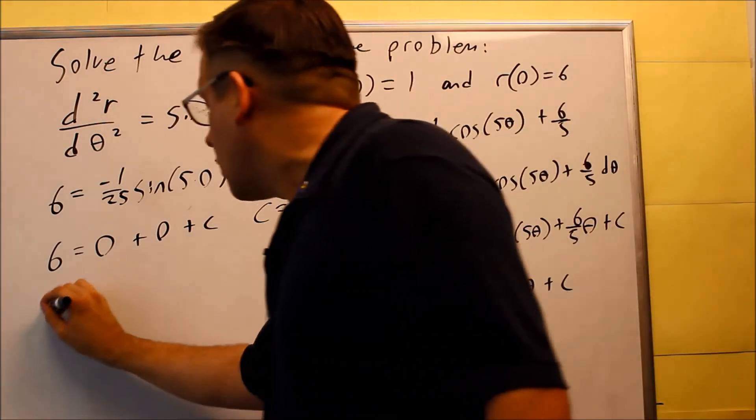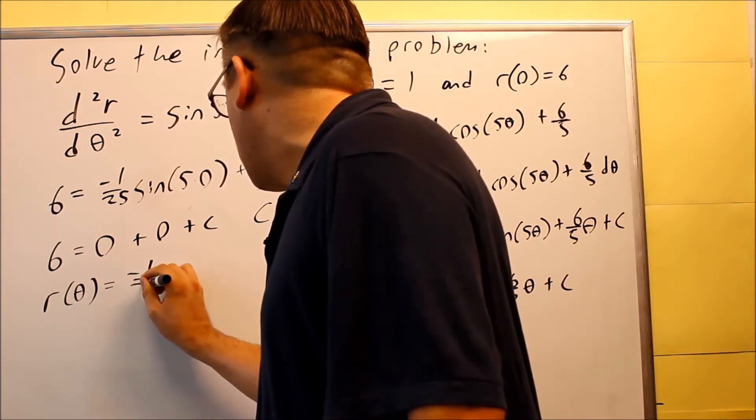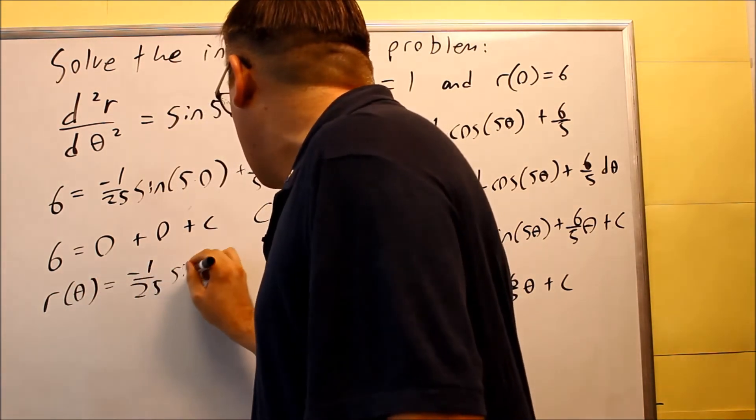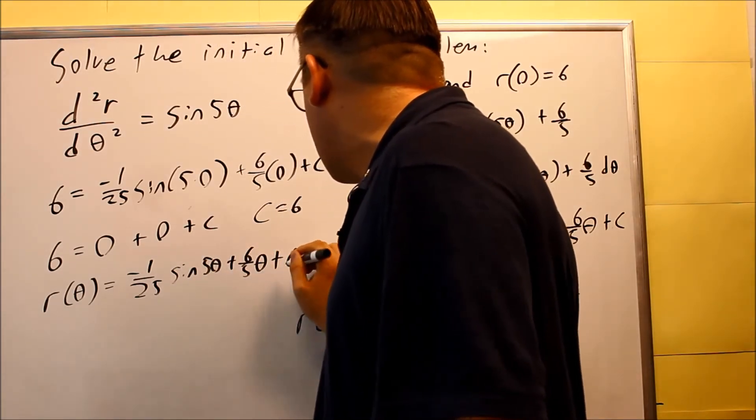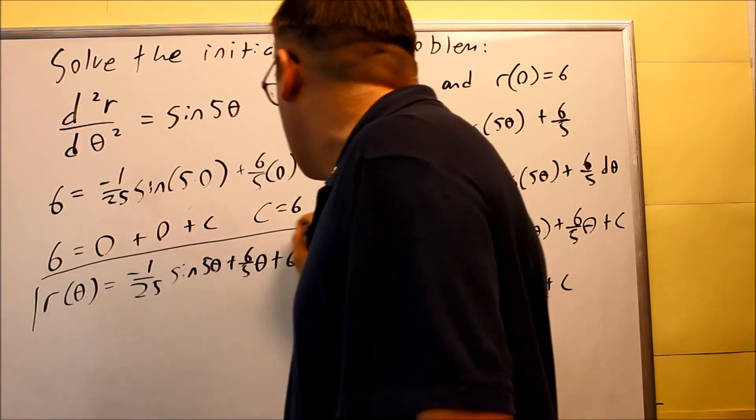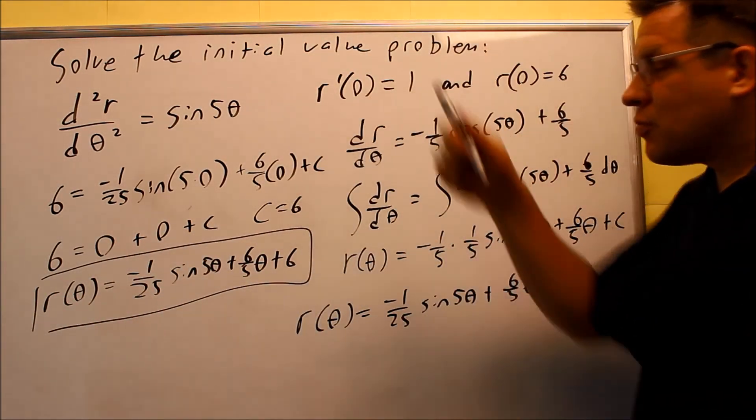And we're ready to write our final solution now. Negative 1/25 sine of 5θ plus 6/5 θ plus 6. This would be your exact solution that has all these particular characteristics.